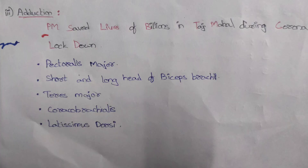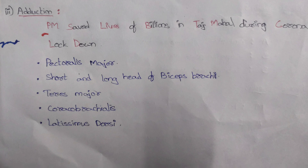The third movement is adduction. The mnemonic is 'PM saved lives of billions in Taj Mahal during corona lockdown': PM for pectoralis major, S and L for short head and long head of biceps brachii, Taj Mahal for teres major, corona for coracobrachialis, and lockdown for latissimus dorsi.